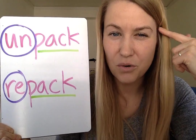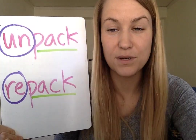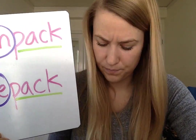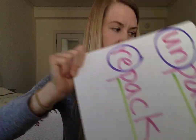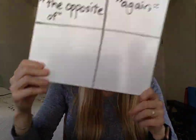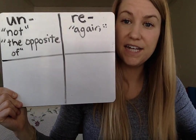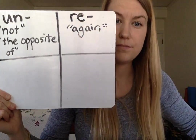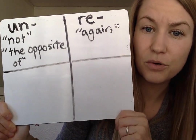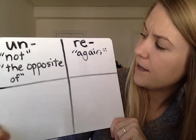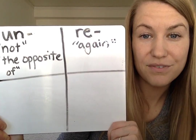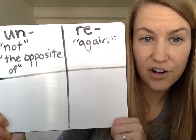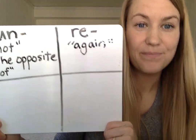But here's the thing — you need to know what these prefixes mean. In the case of 'un' and 're,' which are all your spelling words this week: when we have a prefix 'un,' that means 'not' or 'the opposite of.' And when we have the prefix 're,' that means 'again.'